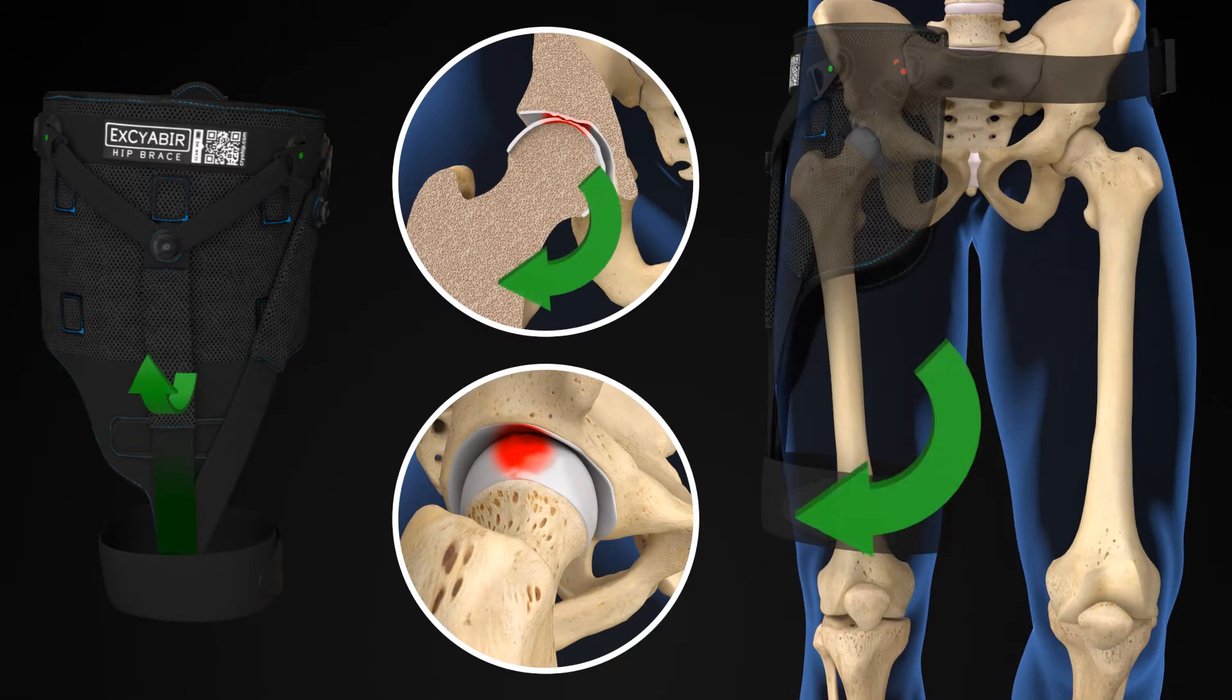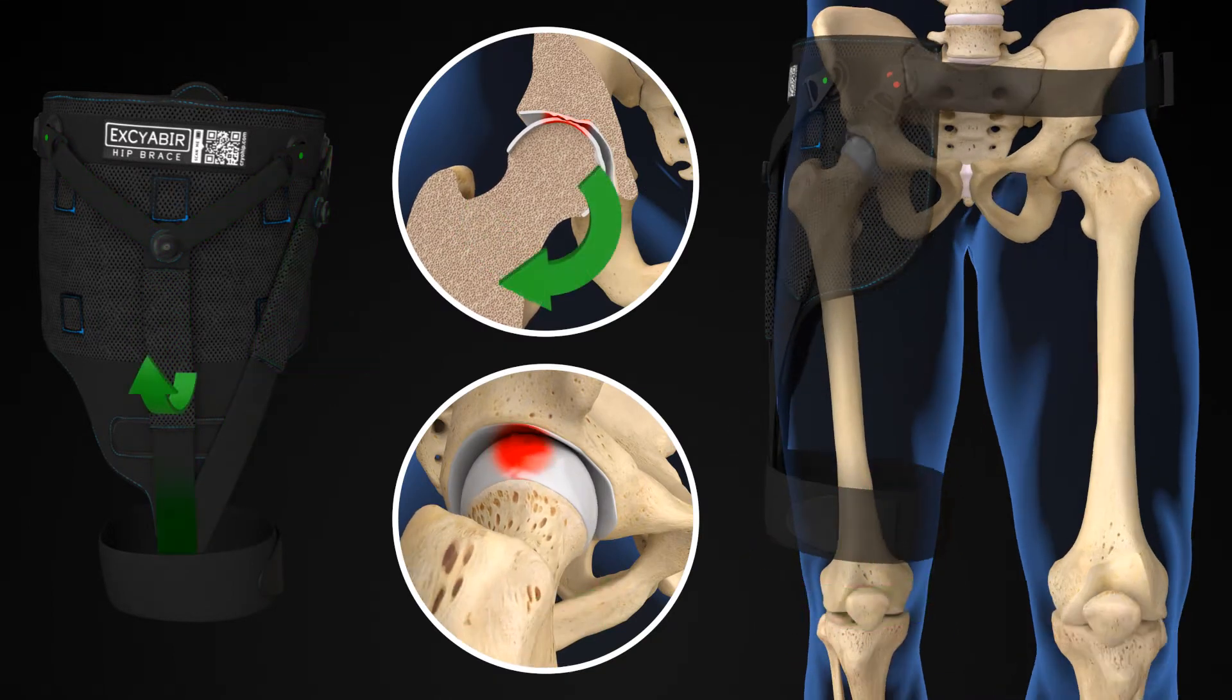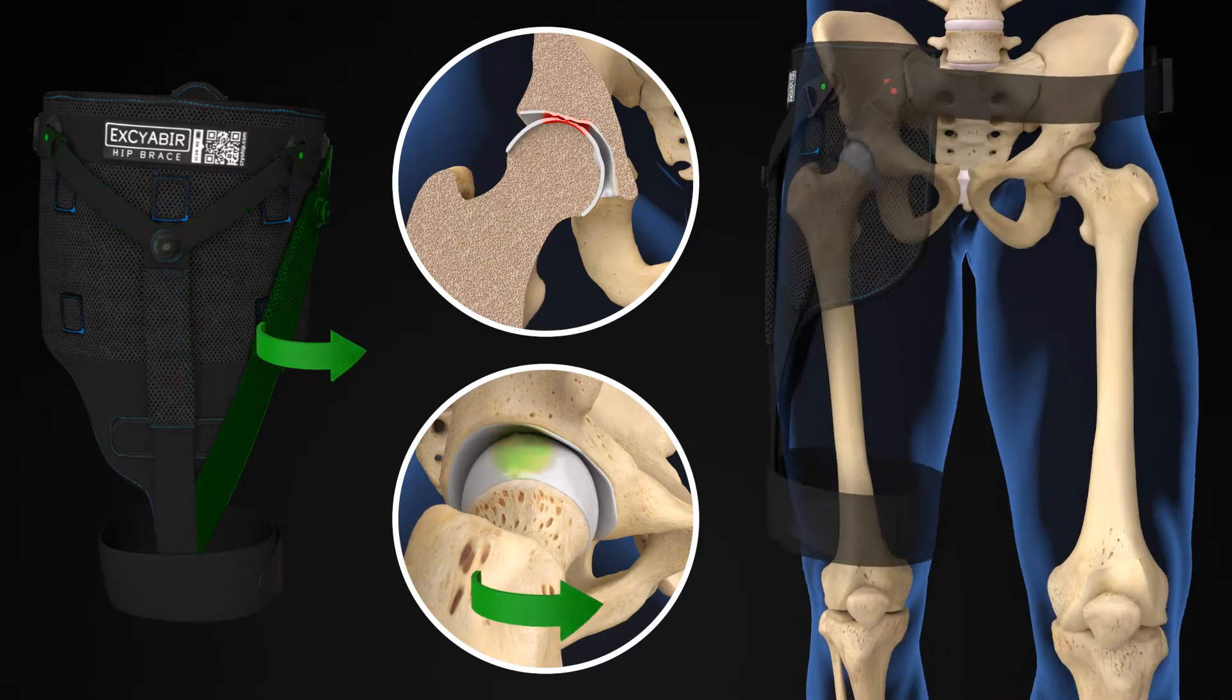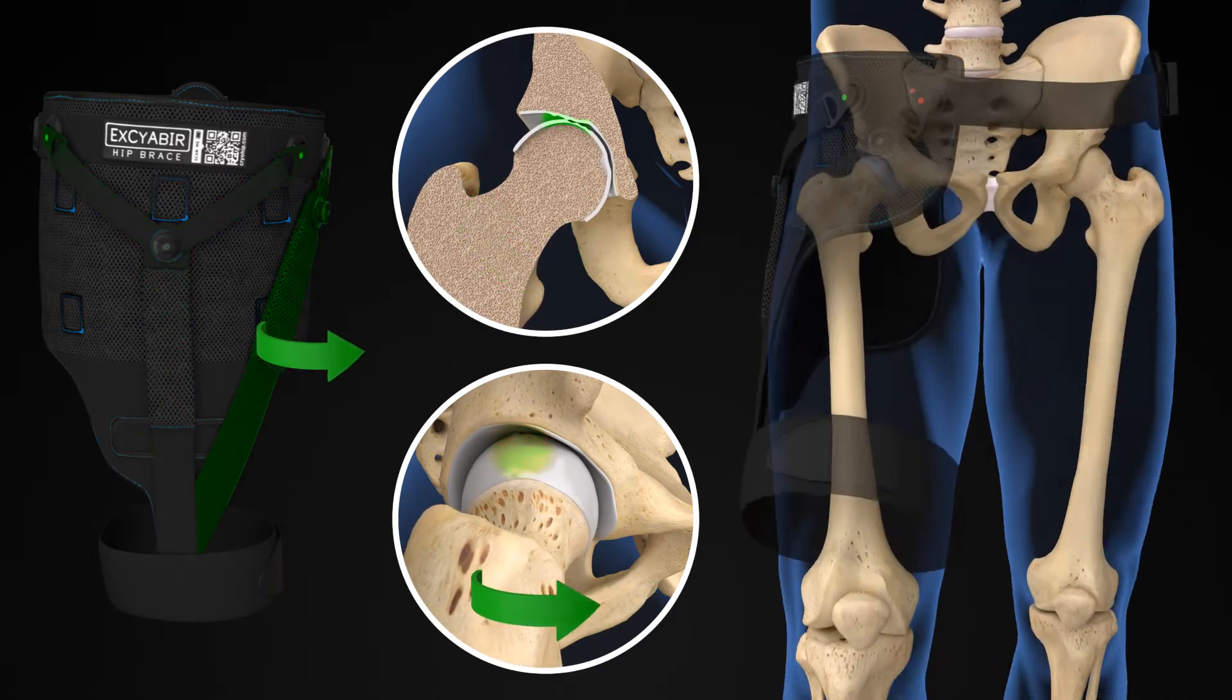Additionally, slight abduction and internal rotation forces help to move impact to less worn areas of the hip affected by osteoarthritis.